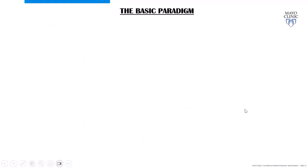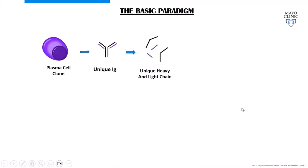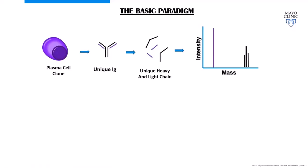Here's the basic paradigm: a plasma cell makes a unique immunoglobulin. If I break it into heavy and light chains and measure the mass, I get the heavy chains at higher mass — but not a single peak because of glycoforms, which vary even within the same clone. For the light chain, however, there's typically no post-translational modification, so it gives a single mass and ionizes better. That mass is what I use to follow the clone.